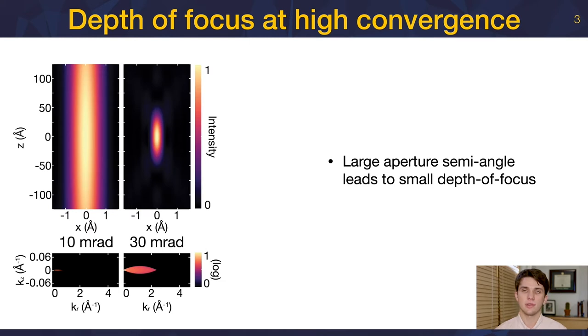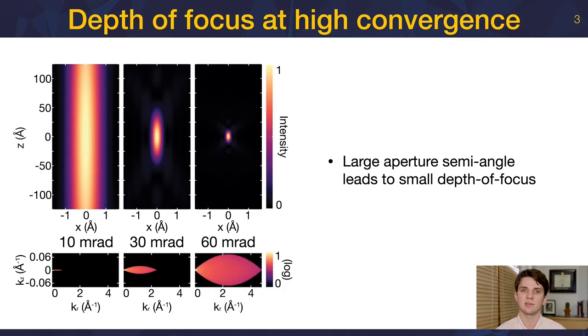With aberration correction, however, we use larger aperture semi-angles to improve resolution. In this 30 milliradian probe, we see that the probe is confined in the x and y directions, but now it's also confined in the z direction. If we look at the CTF, we see that we collect higher spatial frequencies, but the CTF now extends in the k-z direction. This will not give us a perfect projection. Only a small part of the object can be in focus at any one time. With the advanced microscopes being presented at this meeting, aperture semi-angles are reaching 60 milliradians and beyond. Here we see just how confined the probe is in the z direction. This means it's imperative that we define the limits for aberration-corrective tomography.